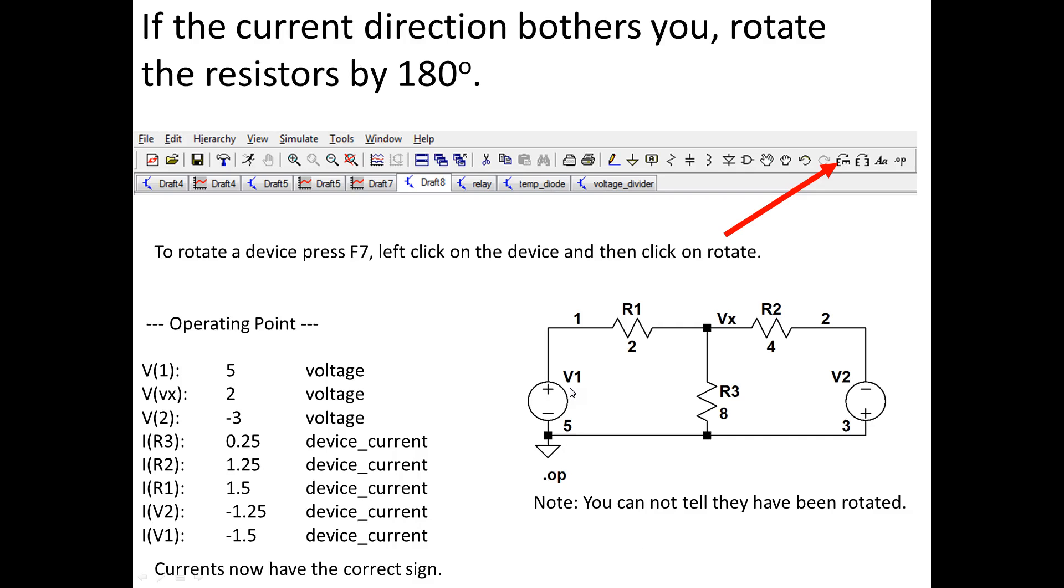If it really bothers you that the currents are going in the wrong direction, all you have to do is rotate the resistance. And so you would click F7, click on the device, and then click on rotate twice, stamp it back down. And you would do it for each one of these resistors.